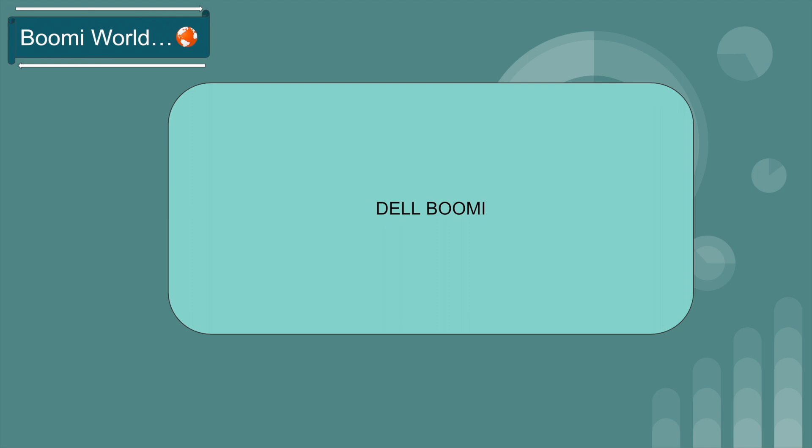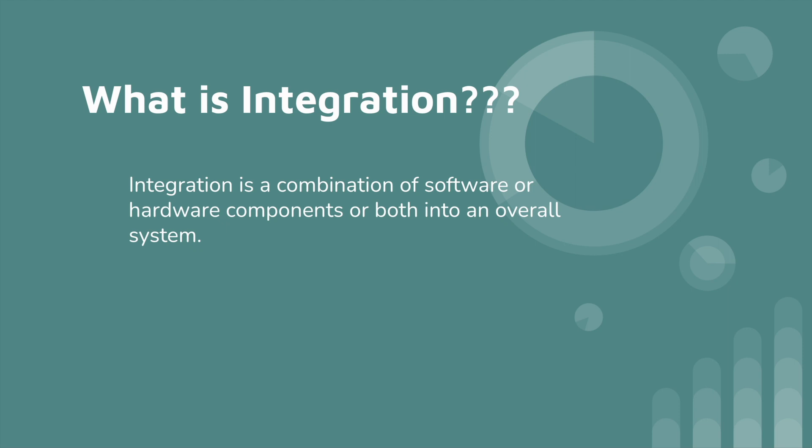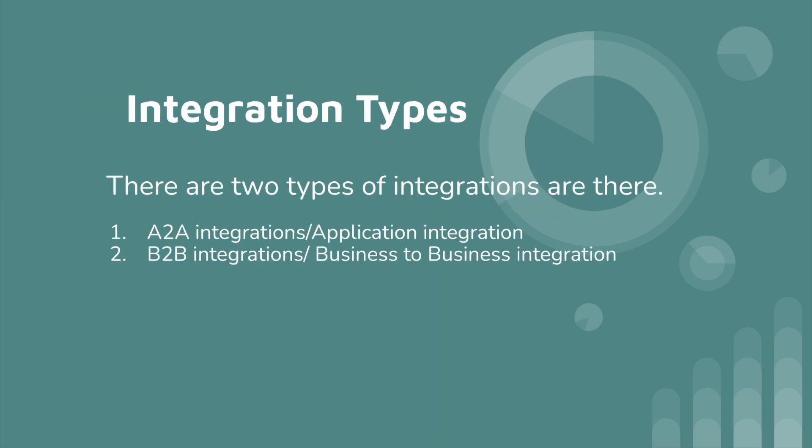First of all we should know what is integration and the types of integration in Boomi. Integration is a combination of software or hardware components, or both, into an overall system — which means transferring the data between one system to another system.